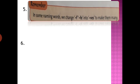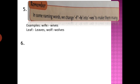Rule number 5: in some naming words we change F or FE into VES to make them many. If any word ends with F or FE, when we convert it from singular to plural, we use VES instead. For example, wife — W-I-F-E — the last letters are FE, so the plural is wives — W-I-V-E-S. FE is converted into VES. Similarly, life → lives, wolf → wolves.